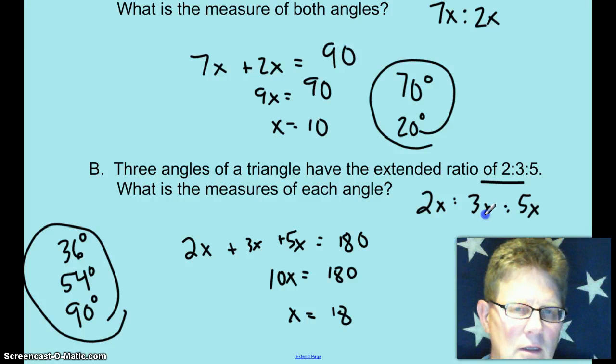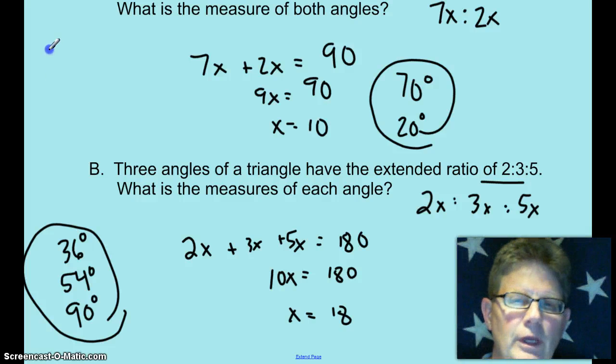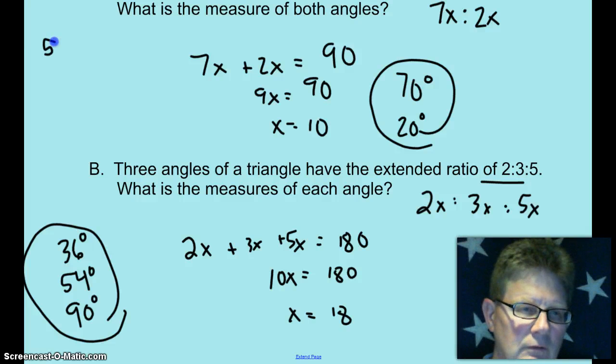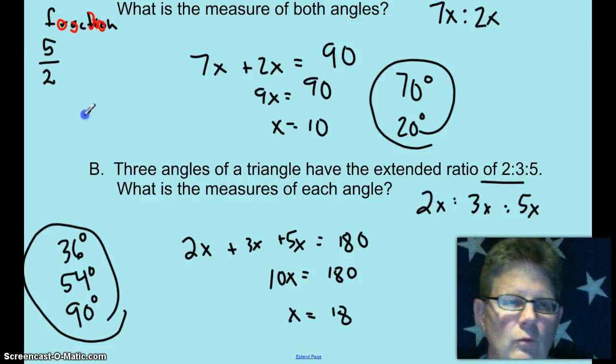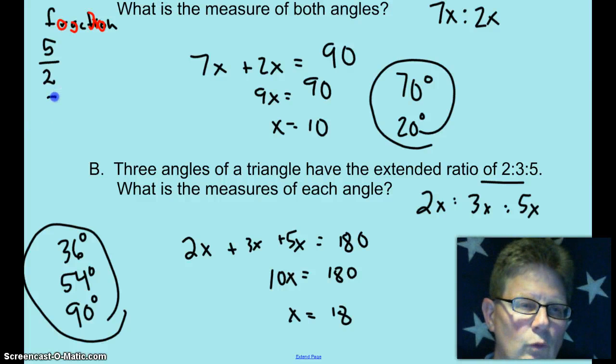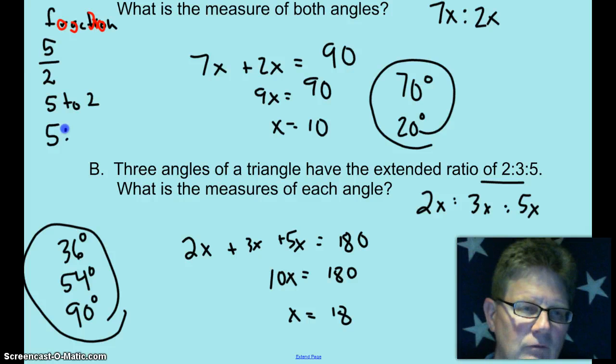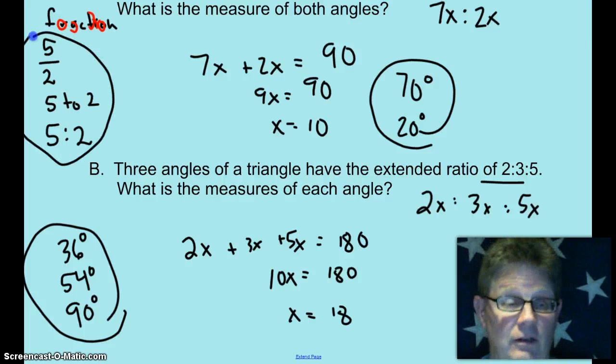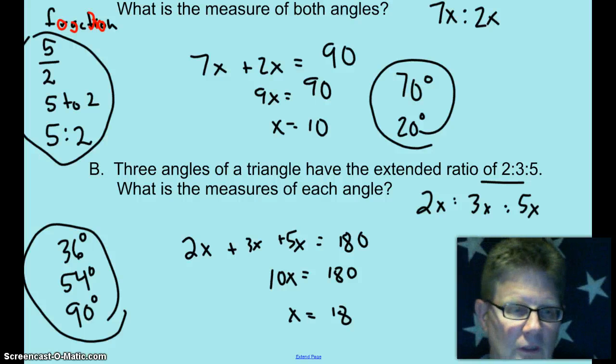By the way, what are the three ways to write a ratio? I totally forgot to even talk about this earlier. The first way you can write it is as a fraction, 5 over 2. After all, the word fraction contains the word ratio, R-A-T-I-O. The other way you can write ratio is with words, 5 to 2. And the third way is to write with a colon, 5 to 2. Those are the three ways to write a ratio.